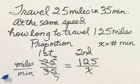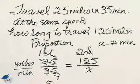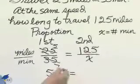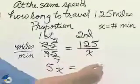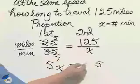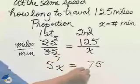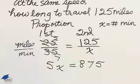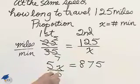Cross-multiply. 5x equals—now 7 times 5, 35. 7 times 2 is 14 plus the 3, and 7 times 1 plus the carry is 875. Divide by 5.